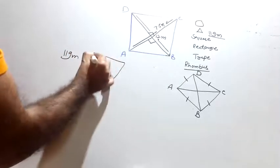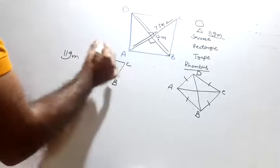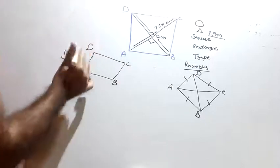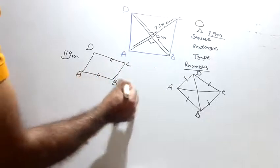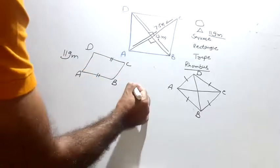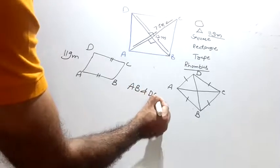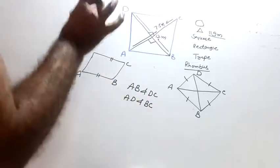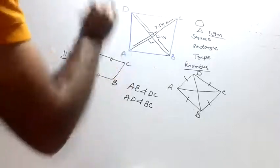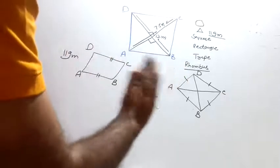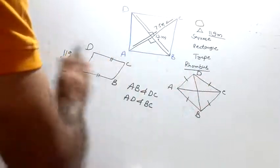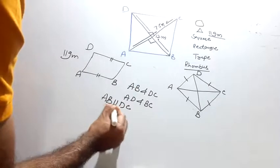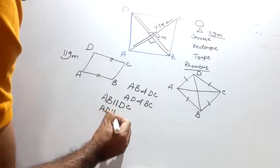Parallelogram means a quadrilateral in which opposite sides are parallel. If I take ABCD as a quadrilateral, parallelogram means opposite sides are parallel. That is AB is parallel to DC, and AD is parallel to BC.